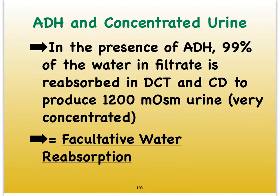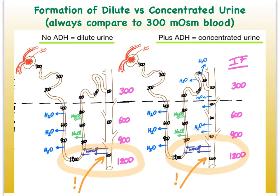Here, the only time water can be reabsorbed is if we give it some help in the form of ADH, and the binding of ADH allows for the building of aquaporins, which are our water channels needed to allow water to move by osmosis. So here we're comparing a nephron that is not exposed to ADH, and consequently the dilute filtrate formed in the distal convoluted tubule, which is at an osmolality of 100, will remain at 100 in the distal convoluted tubule.